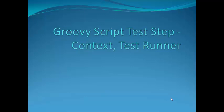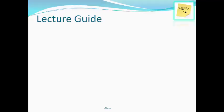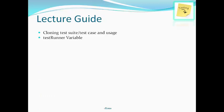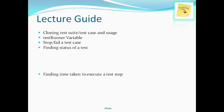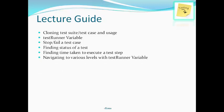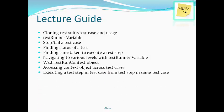This is lecture 19 of section 5 on Groovy script test step context and test runner. In this lecture we will study how to clone a test suite and a test case. We will learn about the test runner variable, stop and fail a test case, finding the status of a test, finding time taken to execute a test step, and how to navigate to various levels with the test runner variable and test run context object.